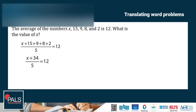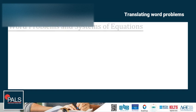Then, undoing the 5, we've got x plus 34 is equal to 60. Then, undoing the plus 34, we've got x is equal to 26.